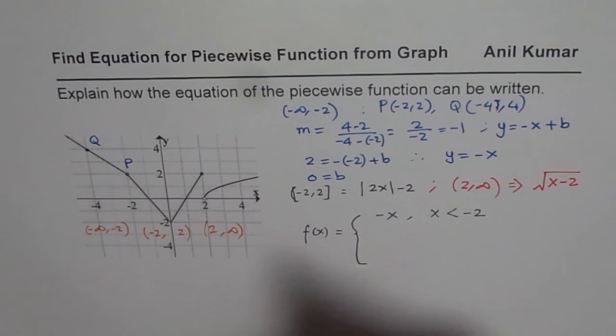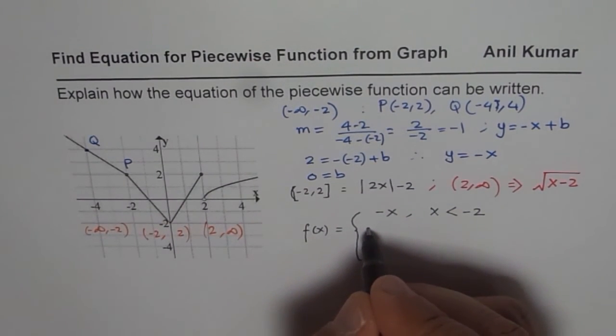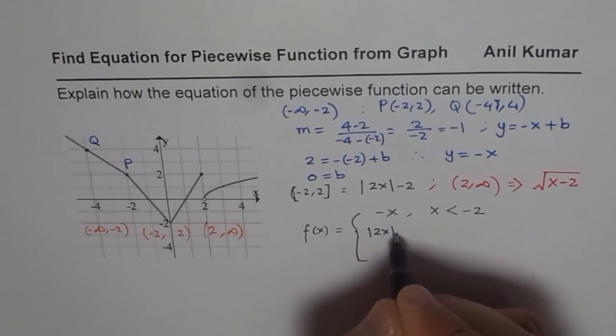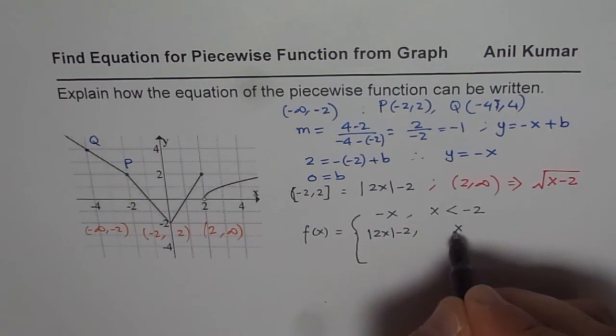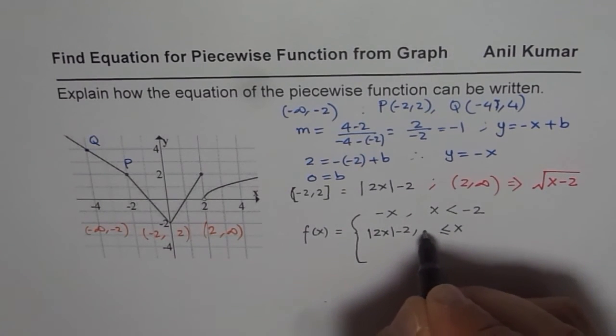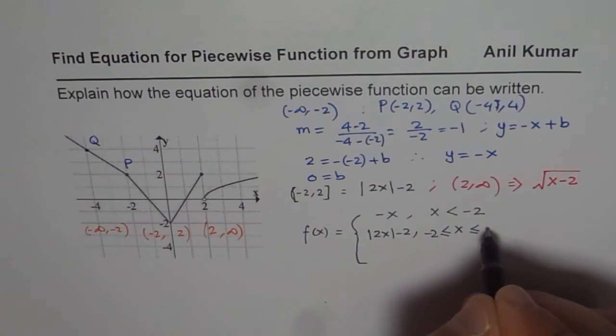The second piece is the absolute function. So which is equal to absolute 2x minus 2, if x is greater than or equal to minus 2, and is less than or equal to 2.